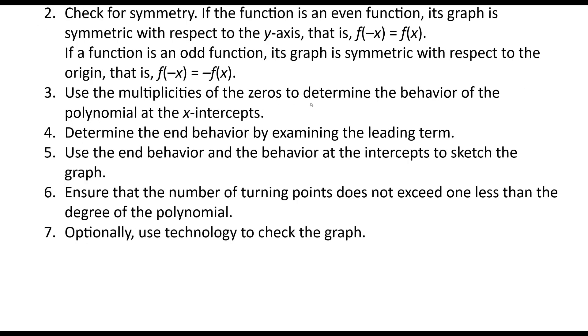Use the multiplicities of zeros to determine the behavior of the polynomial at the x-intercepts. If it's an even multiplicity, it's going to touch it and go back the direction it came from. If it's odd, it'll pass through it, and the bigger the number, the more it flattens out around the intercept.